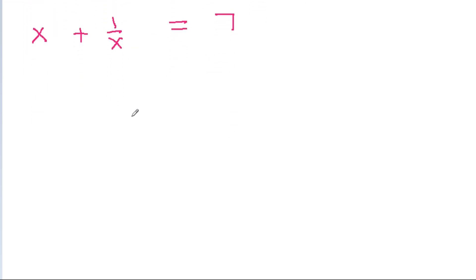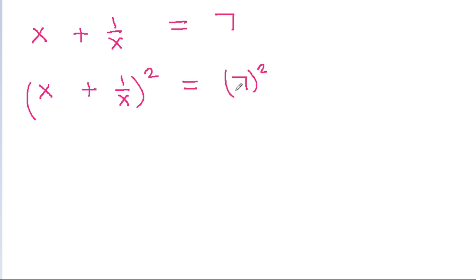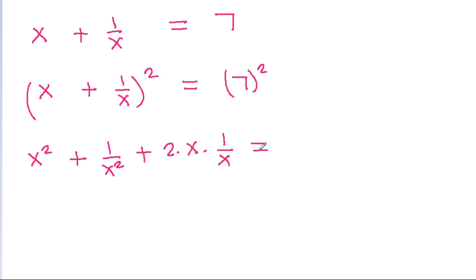If we again square both sides, then x plus 1 by x whole square will be equal to 7 square, and it is x square plus 1 by x square plus 2 times x times 1 by x is equal to 49, and x times 1 by x will get cancelled. So x square plus 1 by x square will be equal to 49 minus 2, which is 47.